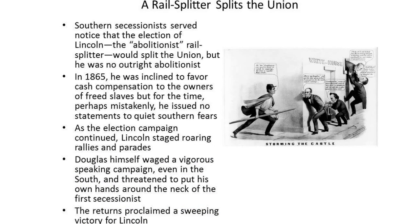Southern secessionists served notice that the election of Lincoln, the abolitionist rail splitter as he was called, would split the Union, but he was no outright abolitionist. In 1865, he was inclined to favor cash compensation to the owners of freed slaves, but for the time, perhaps mistakenly, he issued no statements to quiet Southern fears. As the election campaign continued, Lincoln staged roaring rallies and parades. Douglas himself waged a vigorous speaking campaign, even in the South, and threatened to put his own hands around the neck of the first secessionist.